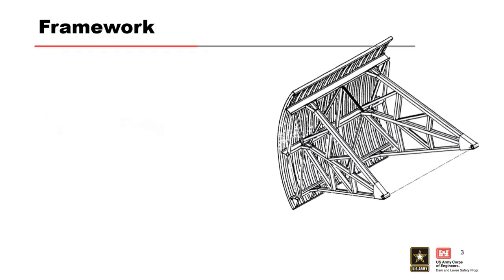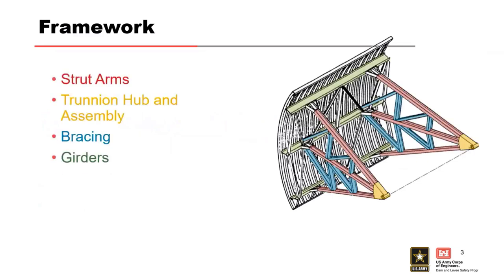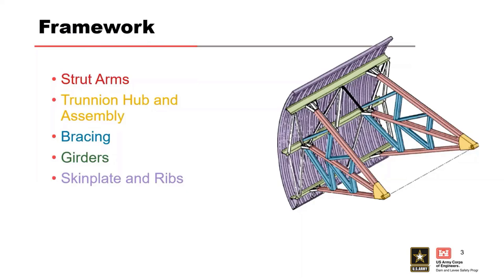We'll start with the load path. With the water on the skin plate and ribs shown in purple, that load gets transferred into the girders running horizontally, shown in green. That load then gets transferred into the strut arms, which is the critical component of a radial gate. Once those buckle, you're typically going to fail the radial gate. Those strut arms are braced by the bracing, shown in blue.